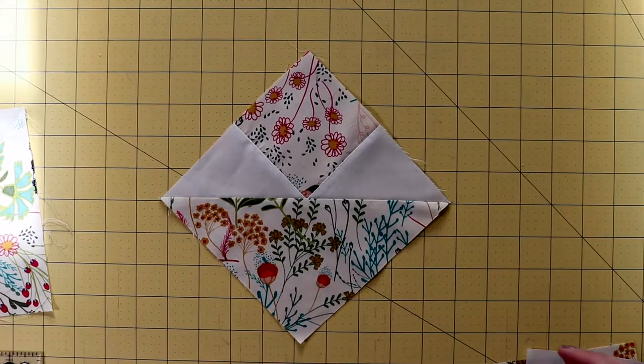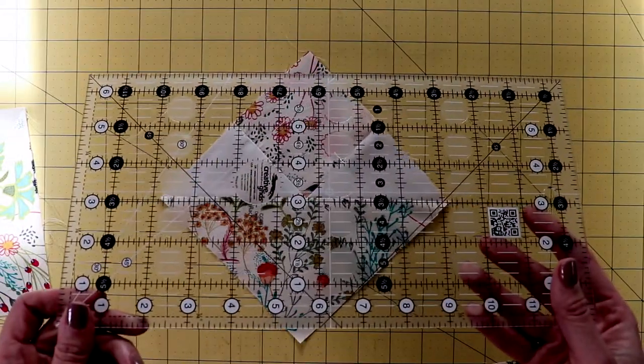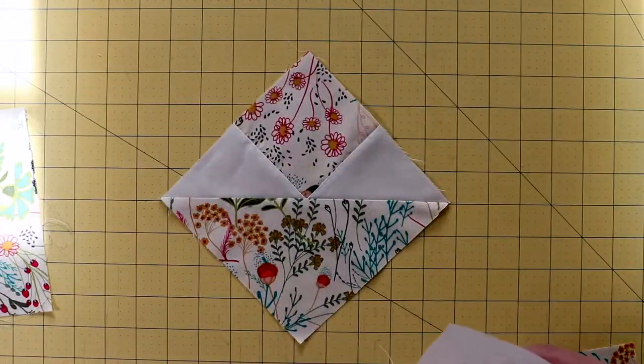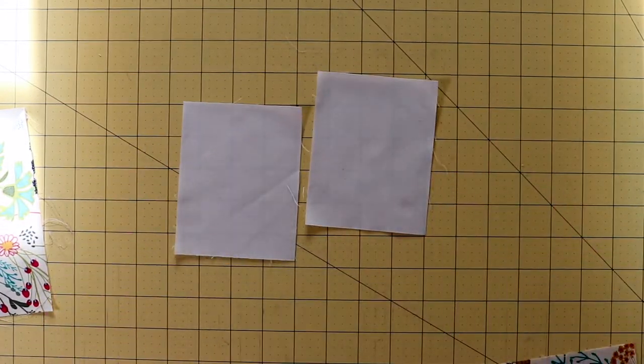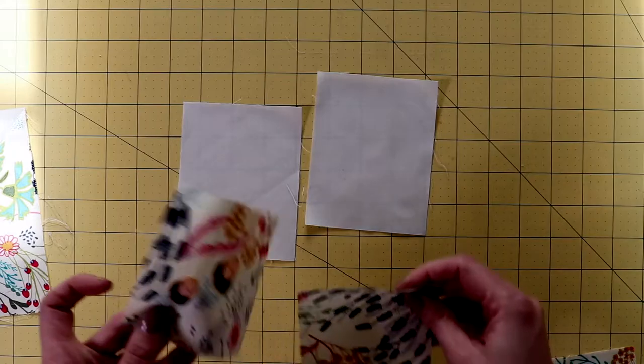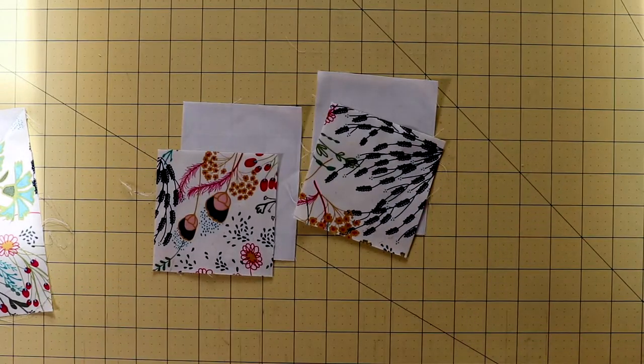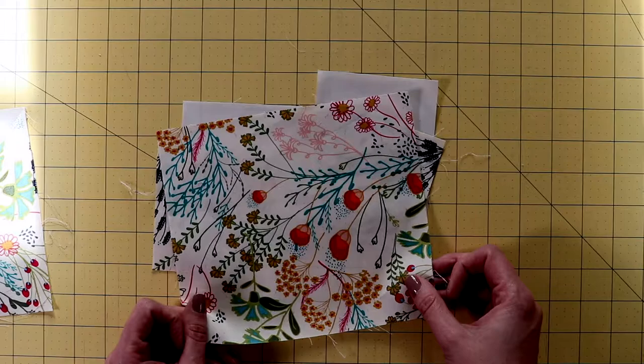So I've done that already. I just used a straightedge to do that. Here are my squares. These are my 2 rectangles. And these are my 2 squares. And then here is the larger piece.